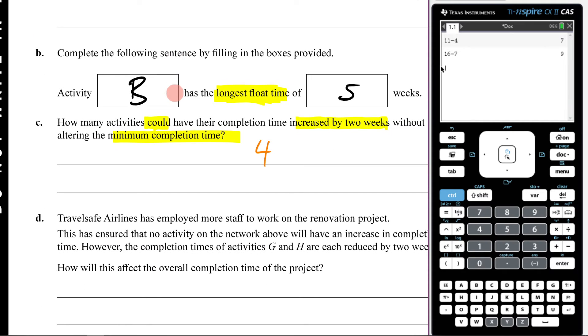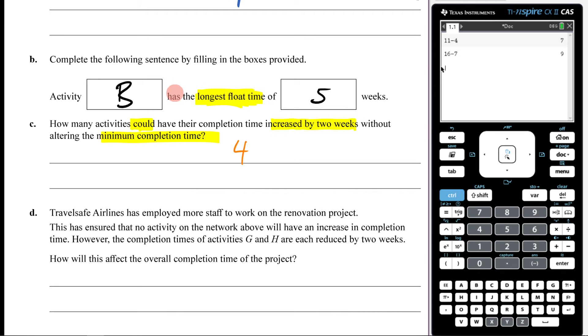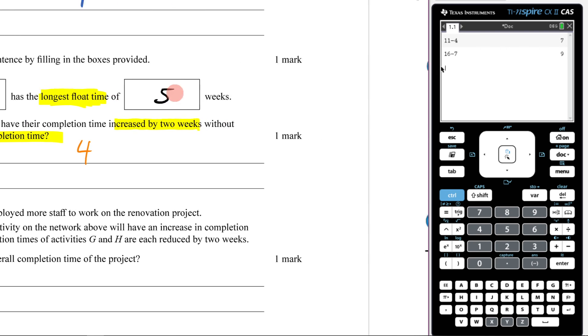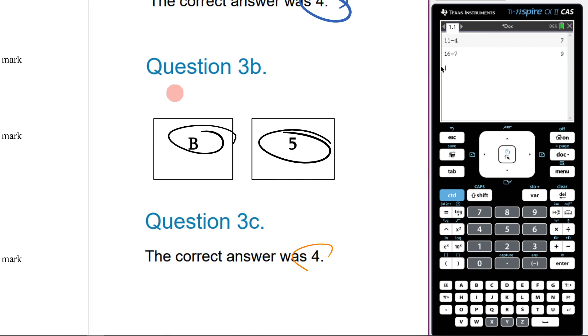How many activities could have their completion time increased by two weeks without altering the minimum completion time? Four activities could have their minimum completion time increased. So my answer is four. Correct answer was four.